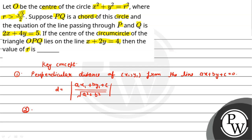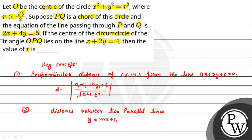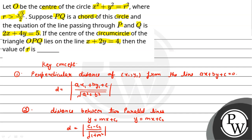The second point is: if we have two parallel lines, since both lines are parallel their slopes will be the same. If one line is y = mx + c₁ and the other is y = mx + c₂, then the distance formula between them is d = |c₁ - c₂| / √(1 + m²). We will use both these formulas to solve this question.